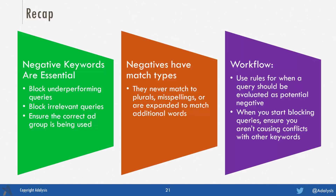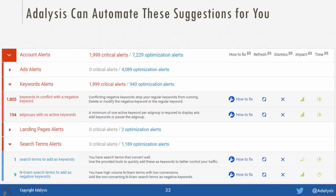To recap: negative keywords are essential. They block underperforming queries, block irrelevant queries, and ensure the correct ad group is being used — but they have match types. Regardless of match type, negatives never match plurals, misspellings, or expand to additional words. What you want is a workflow: if queries hit a threshold — clicks, spend, cost per conversion, or a combination — evaluate whether that word should be a negative. When you start blocking words, make sure you're not causing conflicts with other keywords, and periodically review any conflicts that have accumulated from managing the account. If you're looking to automate this, you can use a system like Adalysis, which automatically scans and surfaces this data, or you can manually do this work within your Google Ads and Microsoft Advertising accounts.